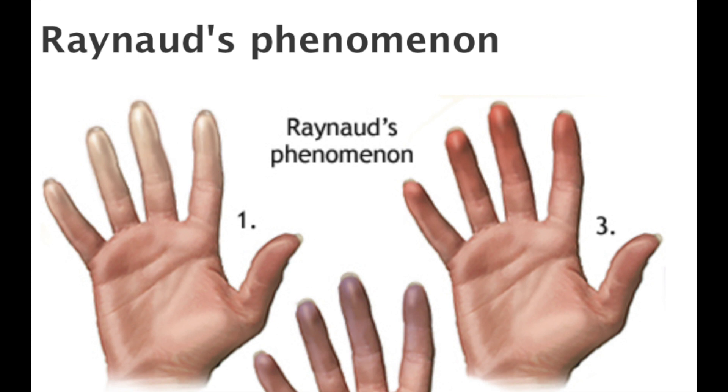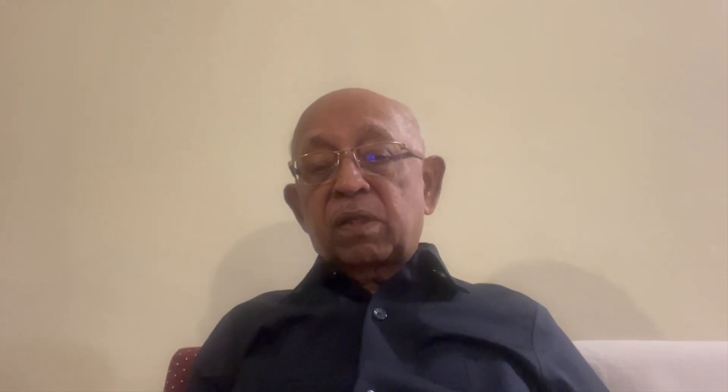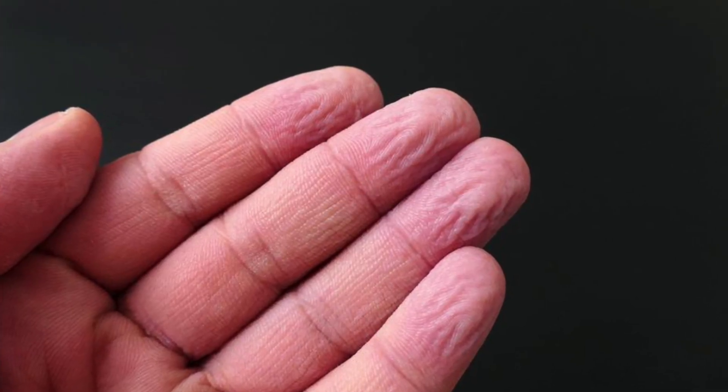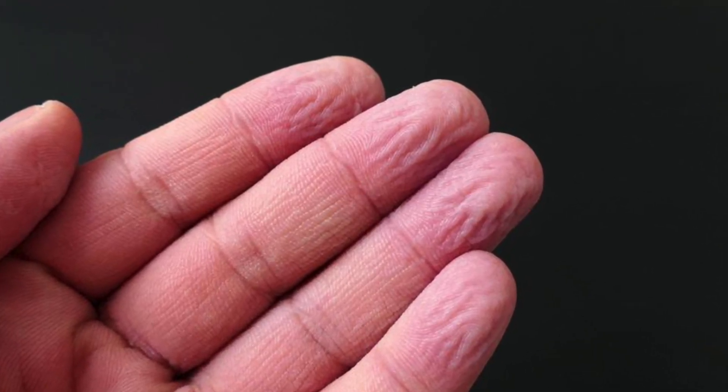In Raynaud's disease with repeated ischemia, the fingerprints may totally vanish. Frequent use of high-potency topical steroids can erase the fingerprints. In atopic dermatitis, even in the absence of active eczema, the fingertips can have reversible ridge flattening. Constant immersion of fingers in detergents can cause adermatoglyphia.